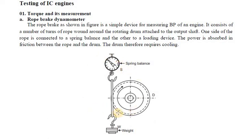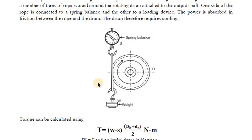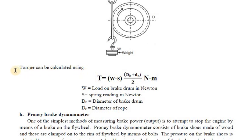The rope brake is a simple device for measuring the brake power of an engine. It consists of a number of turns of rope wound around a rotating drum attached to the output shaft. One end of the rope is connected to the spring balance, and the other end is connected to the loading device. The rope absorbs friction between itself and the drum, and the drum therefore requires cooling.